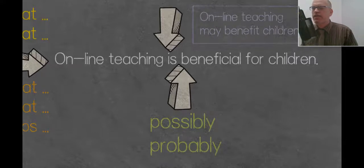Between the verb and the adjective. In the other sentence, we are going to put it between the modal verb and the main verb. So online teaching may possibly benefit children. Or online teaching may probably benefit children. Again, this is making it very weak. So we need to understand that we are going to change the strength of the language. The strength of the sentence by the language that we use and introduce.